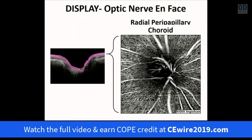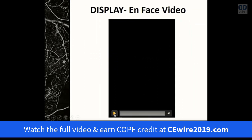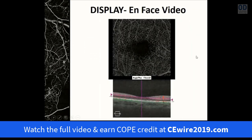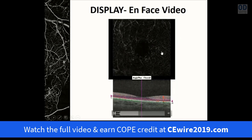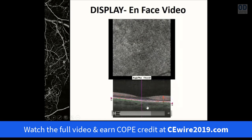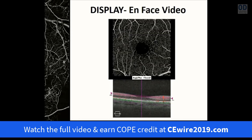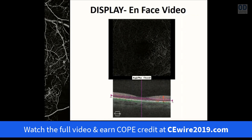A few OCT angiography systems — including the OptiView AngiOview and the NIDEC Angioscan — include predefined en face angiograms for optic nerve scans that visualize the radial peripapillary capillaries often affected in optic nerve disease such as glaucoma. Some systems, such as the Zeiss Angioplex, allow you to play a video in which an en face image changes as a thin segmentation slab moves from anterior to posterior, giving a quick overview of the depth localization of vascular lesions.